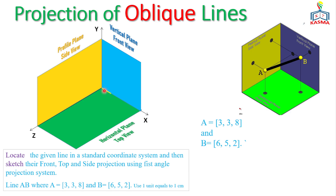Starting with Point A: measure 3 cm along the X-axis, then go vertically with the Y value — which is also 3 cm — and then measure 8 cm in the Z direction. Wait, the Z value for A is 4 cm as given. Once all three components are measured, the intersection gives the exact location of Point A, which we mark accordingly.